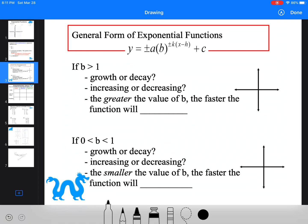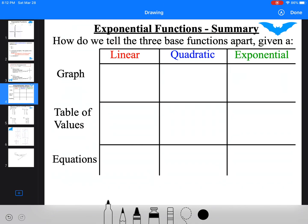The general form is this. Our a value, still in front. Everything that's in the exponent is the horizontal here, and our c value is at the end. If b is bigger than one, this is a growth graph. The graph is going to be going up like this. It's increasing, because it's going up to the right. The greater the value of b, the faster it will increase or grow. If b is between zero and one, it's a decay. It's decreasing, because it's going down to the right. The smaller the b value, the faster it will decay.